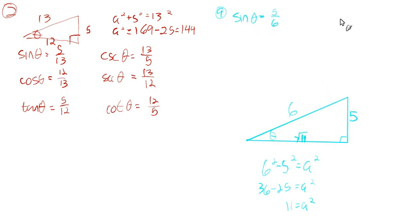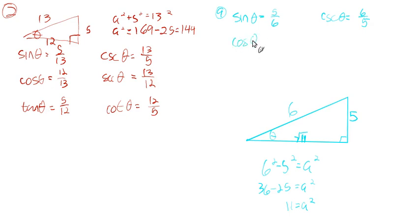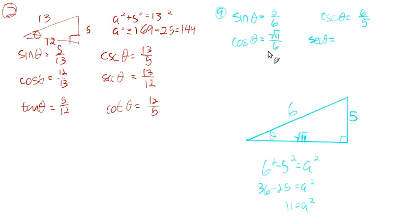Now we can do everything. If we have the sine, we can easily do the cosecant — that's the reciprocal, 6 over 5. We could do the cosine, which is adjacent over hypotenuse — that's √11 over 6. We could do the secant, which would be the reciprocal: 6 over √11.